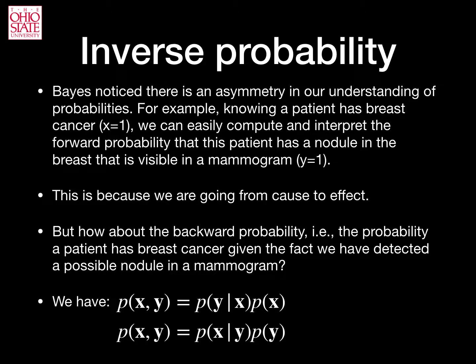Imagine a different problem. We want to know the probability that a patient has cancer. This is a very difficult problem. Imagine that the patient does have cancer, so x is equal to true, or x equals one. Given that fact, we can easily compute and interpret the forward probability that this patient has a nodule in the breast, if it's breast cancer, that is visible in a mammogram. Say, variable y equal to true, or one as well, to indicate that we have detected a nodule in the breast.